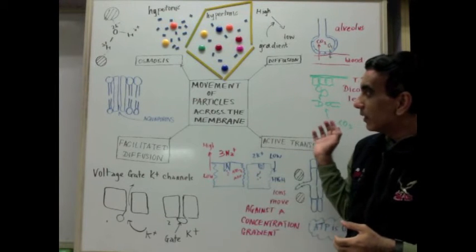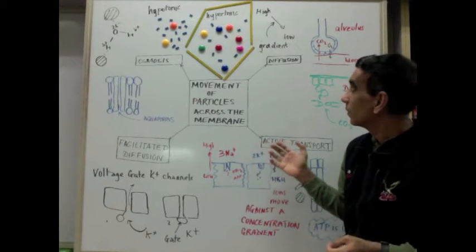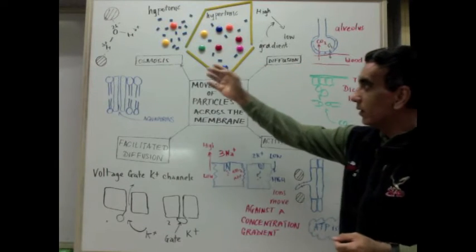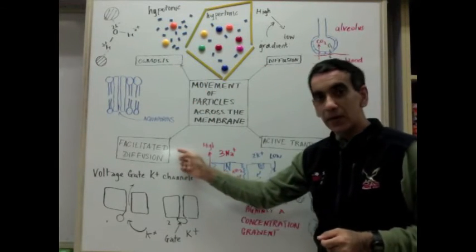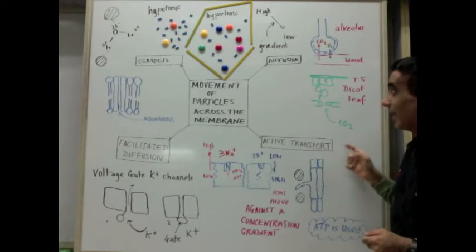One way in which this happens is by diffusion. Another way is osmosis. Then there is facilitated diffusion and there is, of course, active transport.